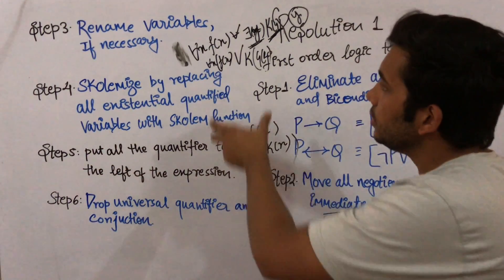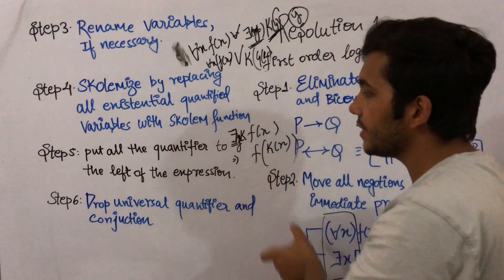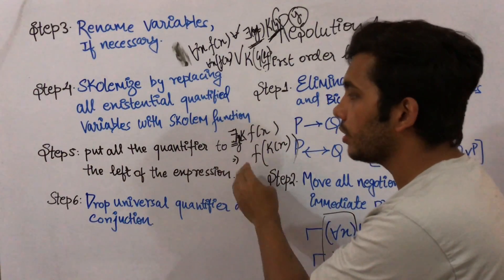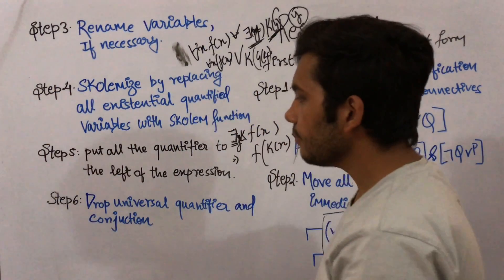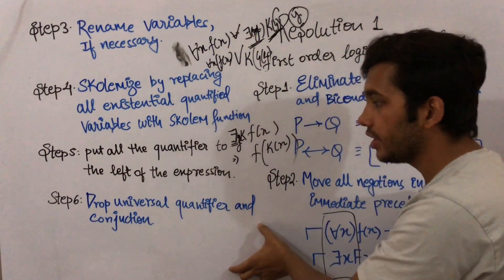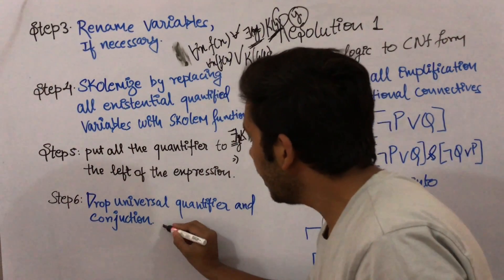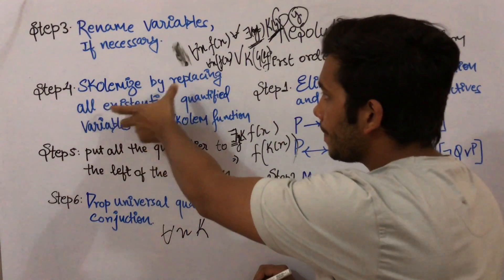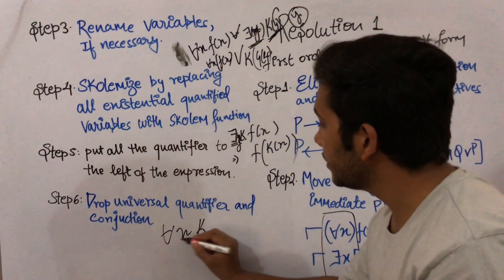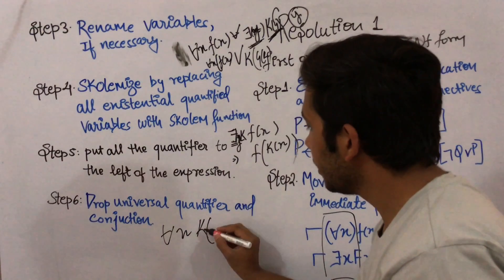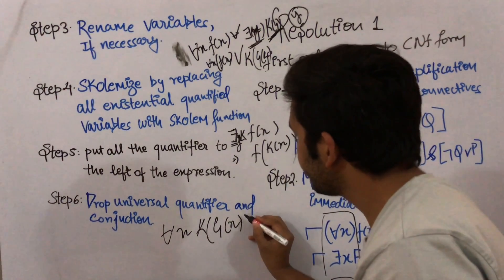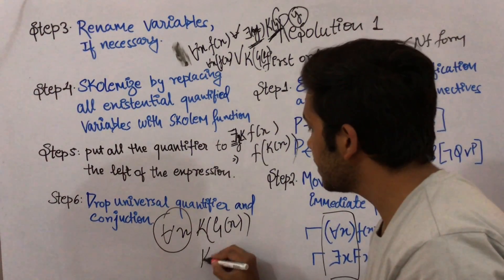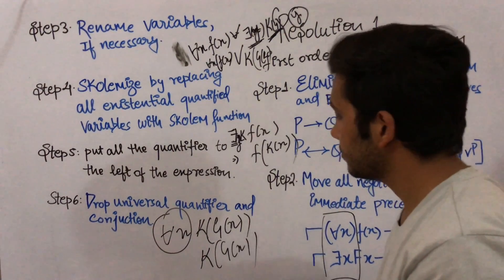After removing or replacing the existential quantifiers, all the universal quantifiers will be left. In step five, we put all the universal quantifiers to the left of the expression. In step six, we drop all the universal quantifiers. For example, suppose the expression after Skolemization is: for all x, k(g(x)). We drop the universal quantifier and write this simply as k(g(x)).